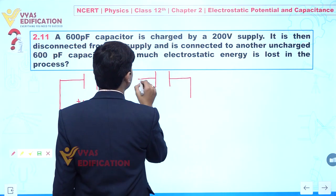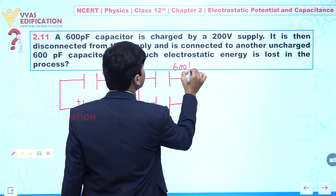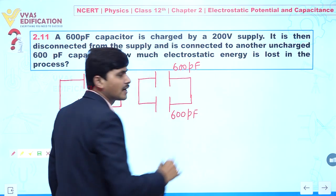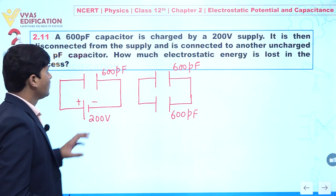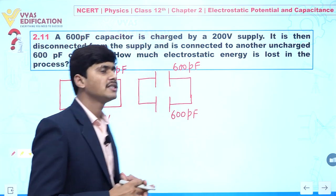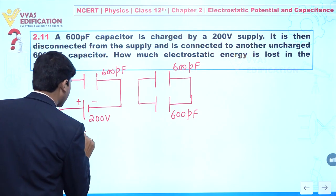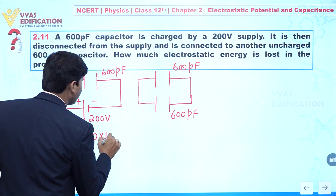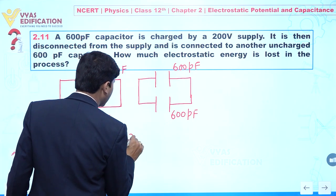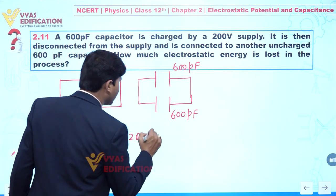Let us suppose this is the charged capacitor and this is the uncharged capacitor. This is 600 picofarad, and this is also 600 picofarad. First, we will find the total charge present on this parallel plate capacitor. Let Q1 be the initial charge. Q1 is given by C into V, which is 600 × 10⁻¹² into 200, giving us the value of Q1 in coulombs.